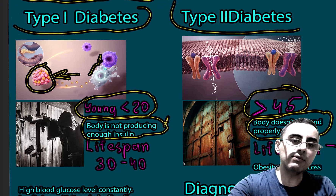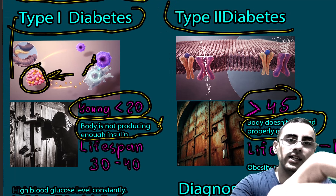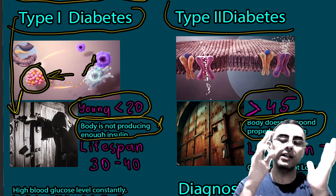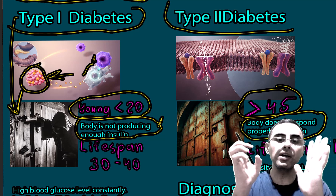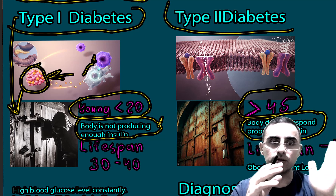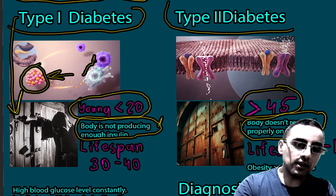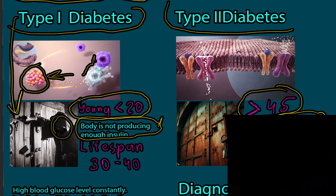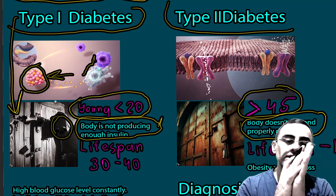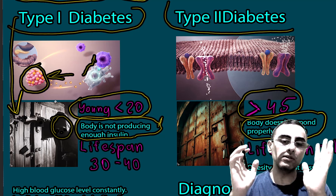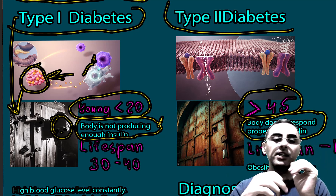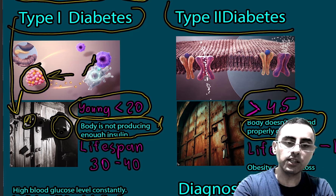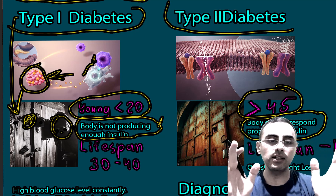As an analogy, in Type 1 diabetes we have no key. We want to enter a room but the door is closed and we have no key, so we can't enter. Glucose cannot enter into cells without insulin. With no insulin, glucose has no key and cannot enter the cell — the key in this case is insulin.